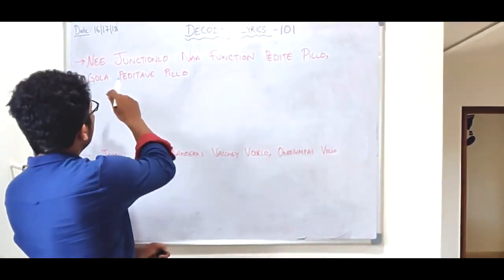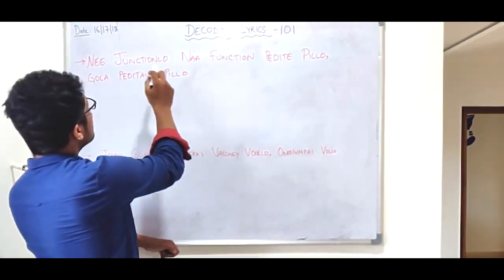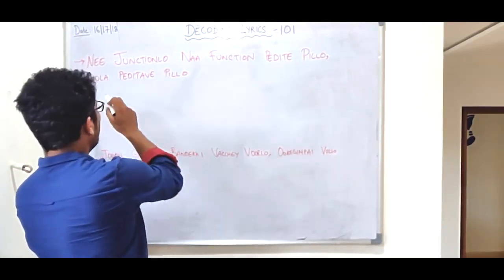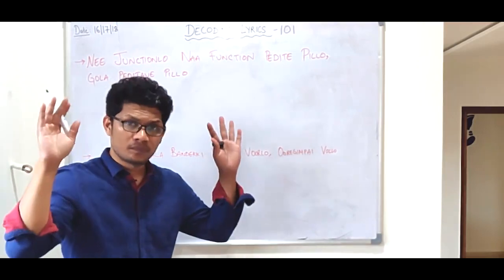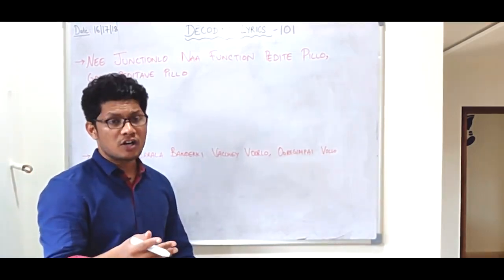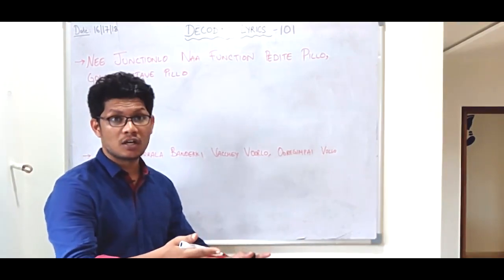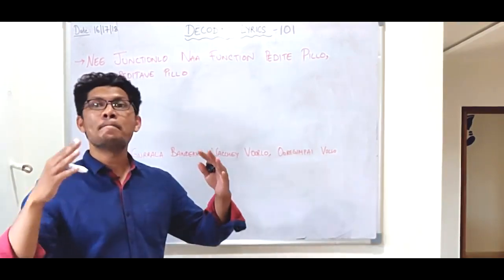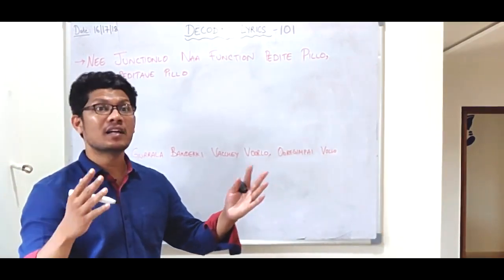Now, let's take a look at the first line of the lyrics. Ni Jankshan Lo na function perte pillo, gola perte ve pillo. Gola. Which means, if I put a function in your junction, you will make it a mess. You will make it a mess, obviously.